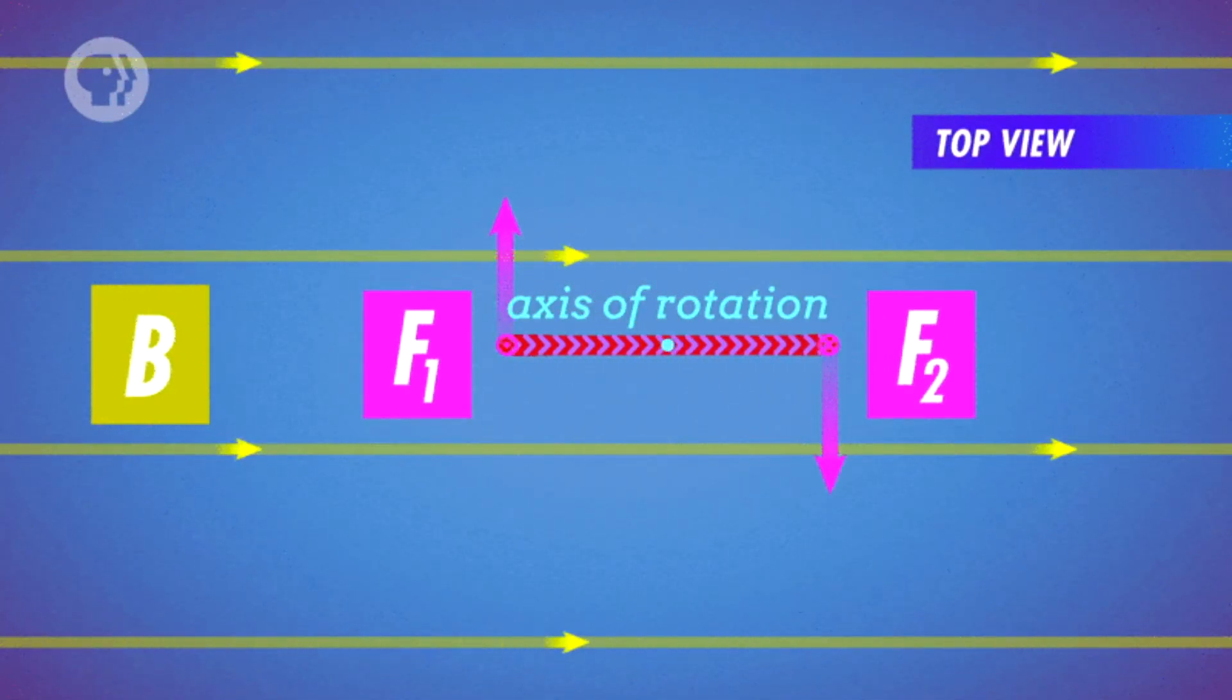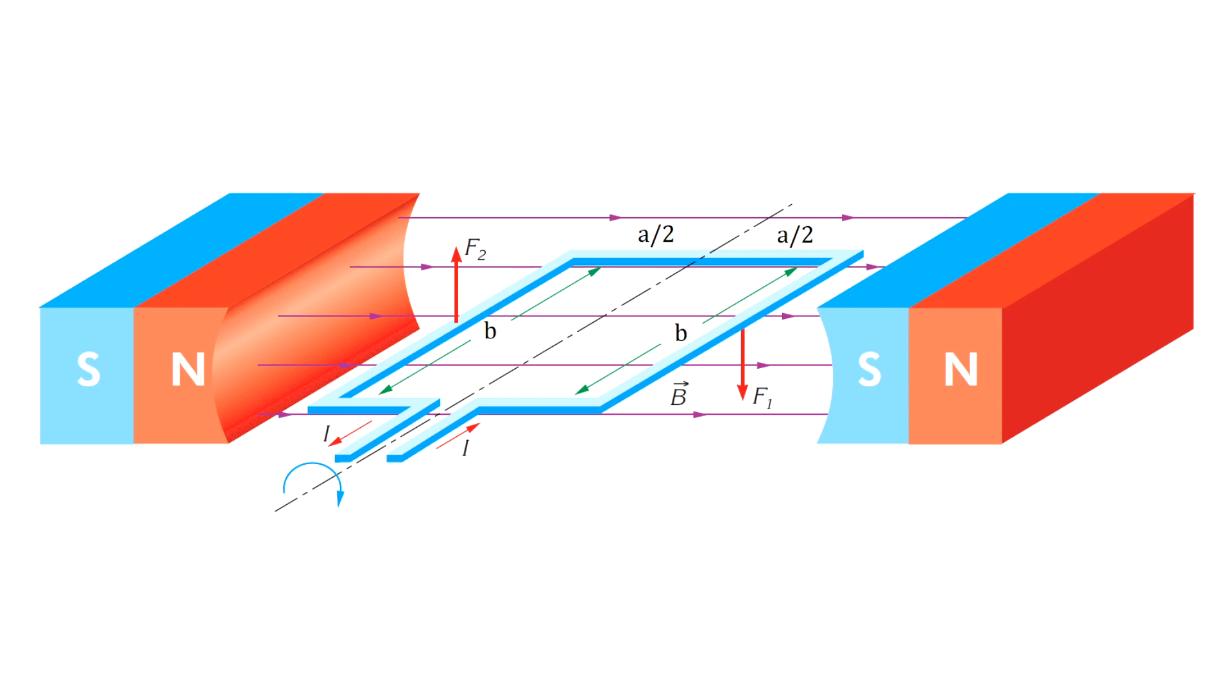Next, we will calculate the torque on this loop. To calculate the torque on this loop, we have to calculate the forces acting on each side of the rectangle.